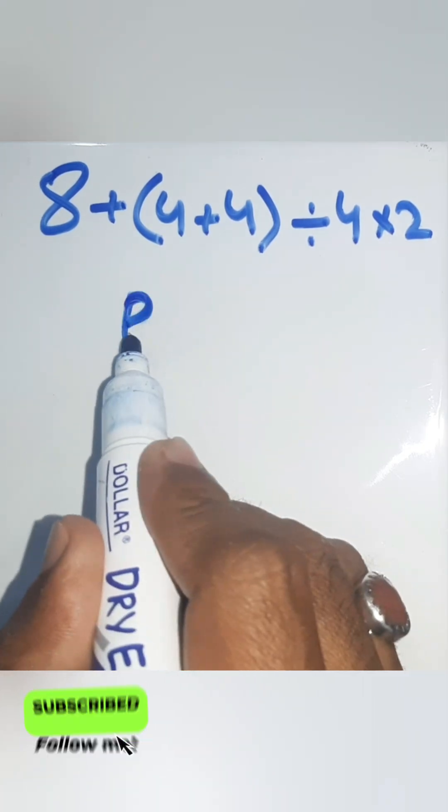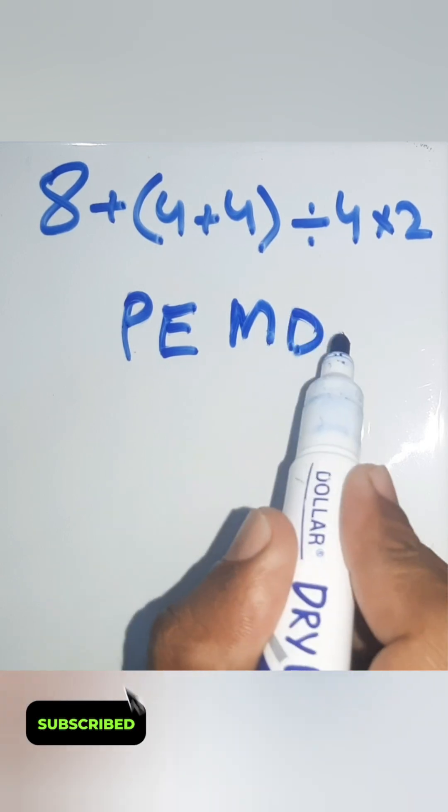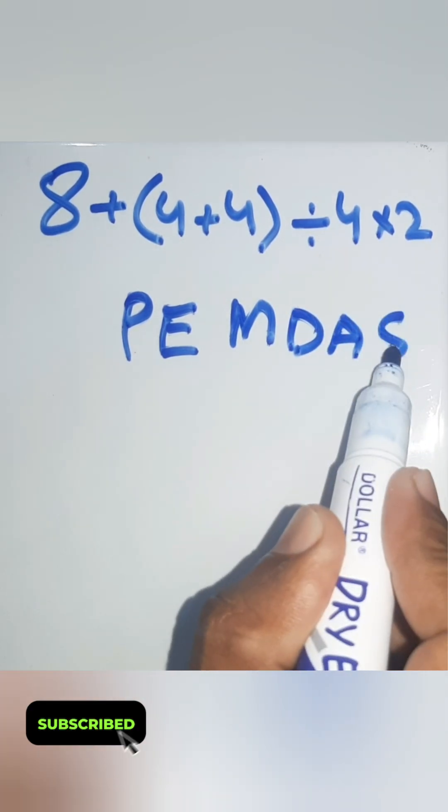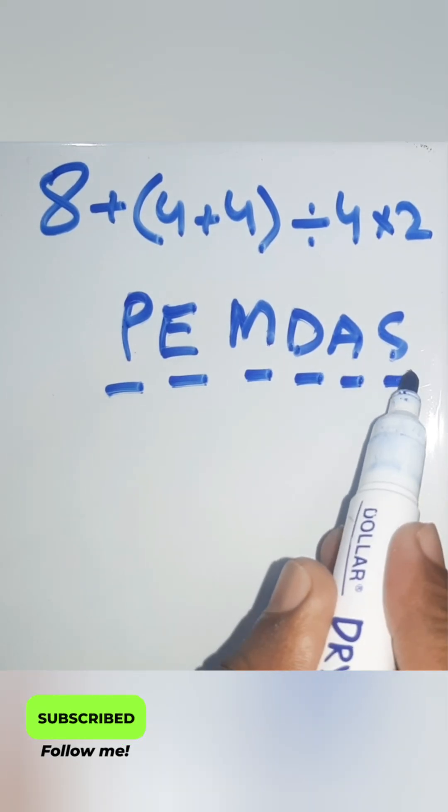P for parenthesis, E for exponent, M for multiplication, D for division, A for addition, S for subtraction. Parenthesis, exponent, multiplication, division, addition, and subtraction.